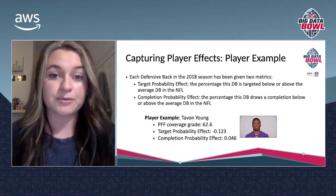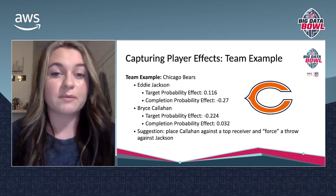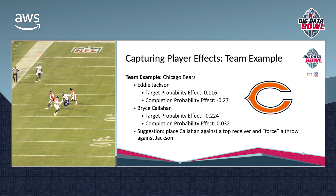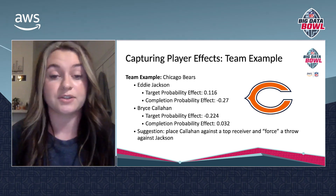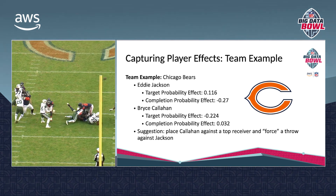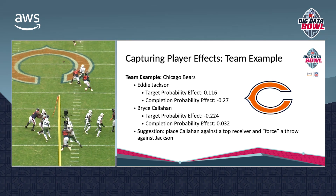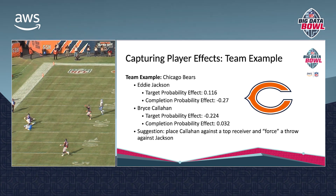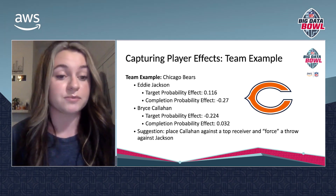I also looked at a team example in capturing these player effects — the Chicago Bears. Eddie Jackson has a target probability effect of 0.11, meaning he is targeted 11% more than the average defensive back. His completion probability effect shows that he causes a completion 27% less than the average defensive back, so he causes incompletions a lot. Bryce Callahan, on the other hand, is targeted 22% less than the average defensive back but causes a completion 3% more than the average. A suggestion for a team would be to place Callahan against a top receiver and force a throw against Jackson — Callahan is unlikely to be targeted, and then you're throwing against somebody who has a very low completion probability.